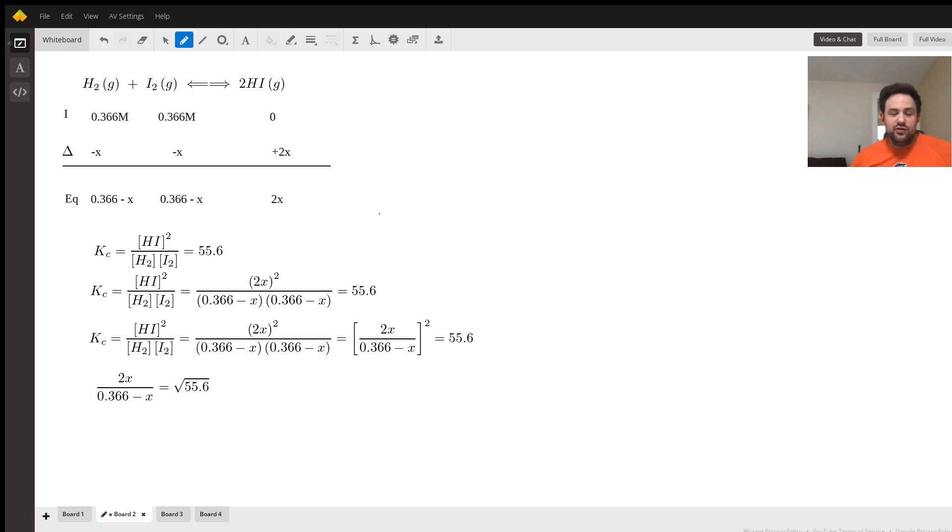This gives us a really nice opportunity to make the math kind of clean and easy. We can basically just agree that both the top and the bottom, the numerator and the denominator, are squared. So we can say that this is the same as (2x)/(0.366 - x), the whole quantity squared. If we take the square root of both sides, we get 2x over 0.366 minus x is equal to the square root of 55.6.